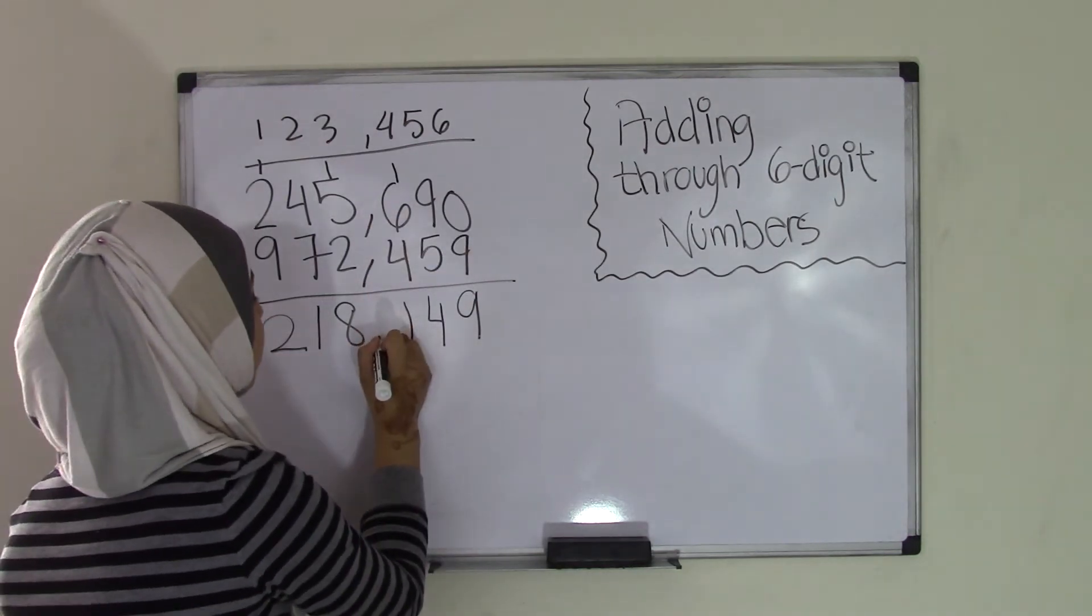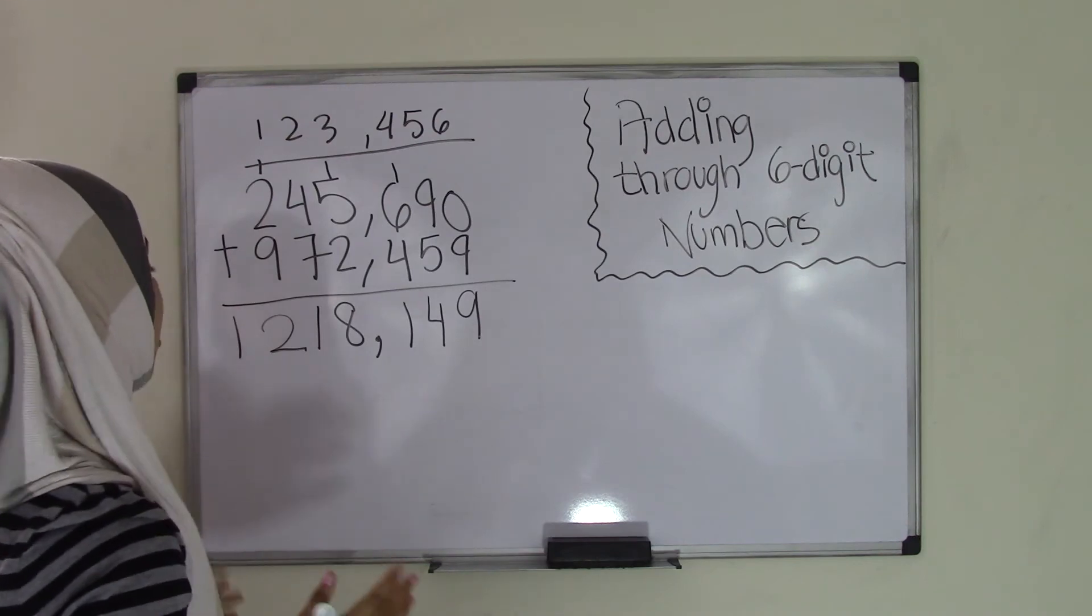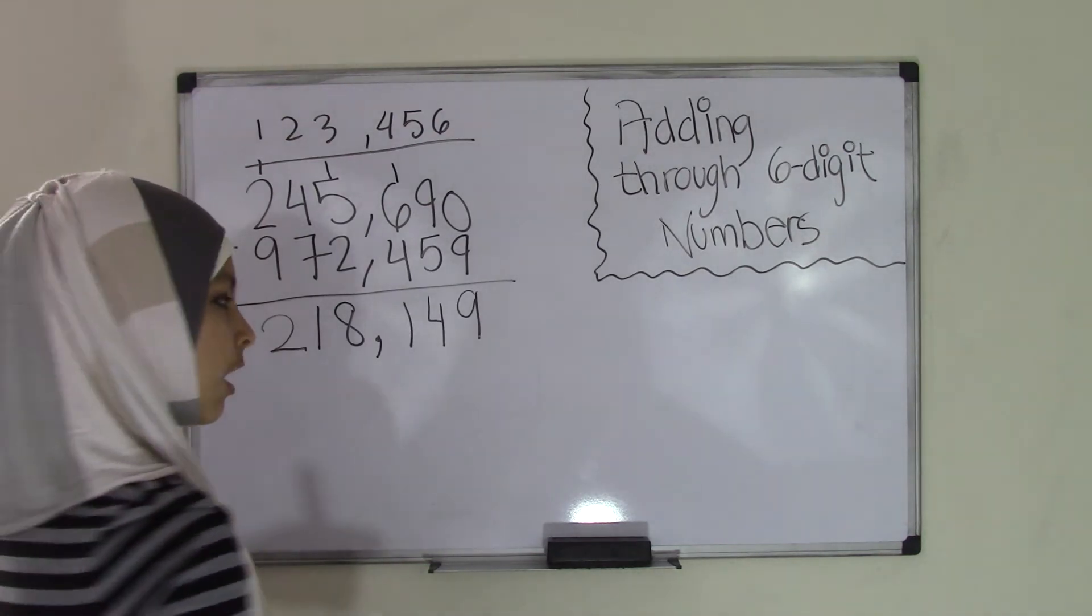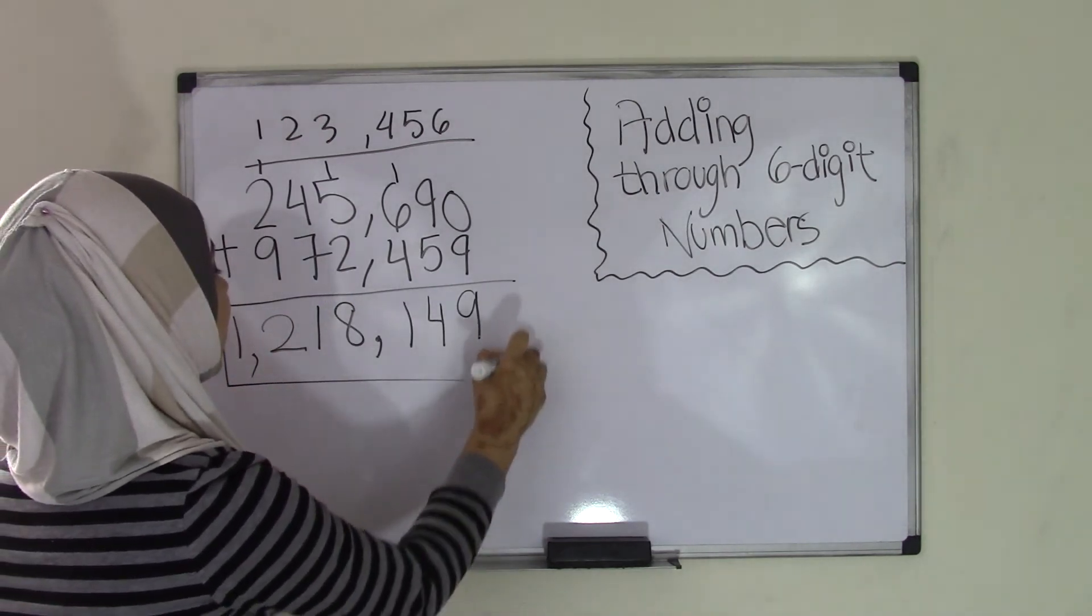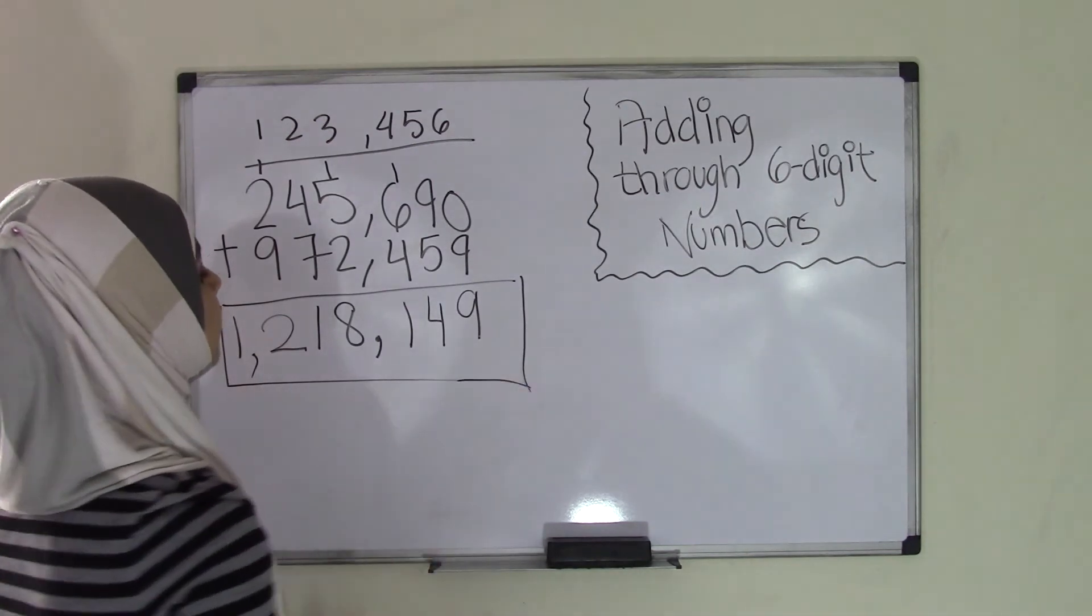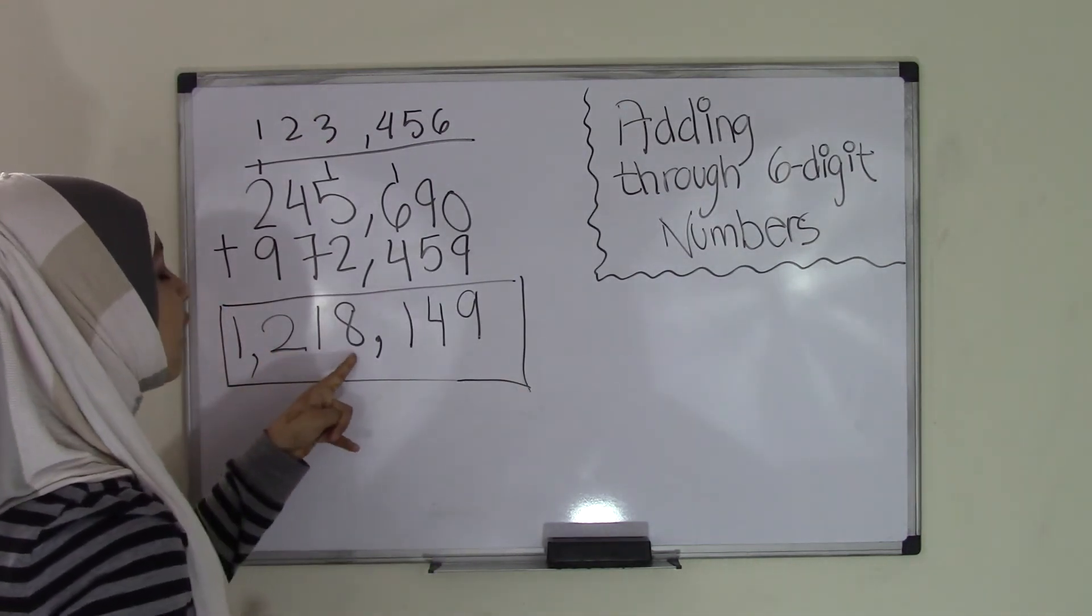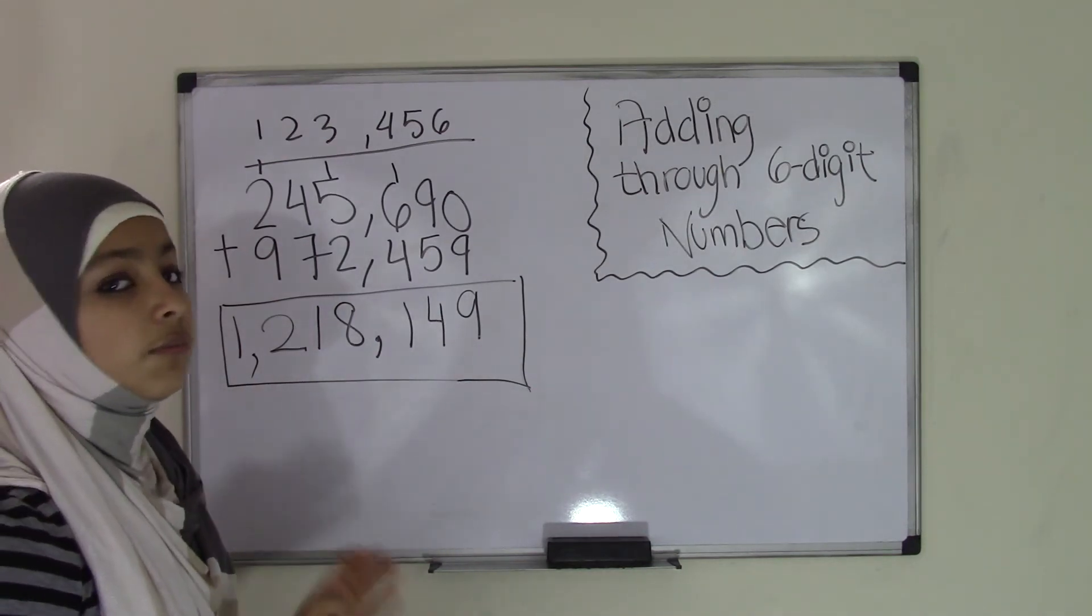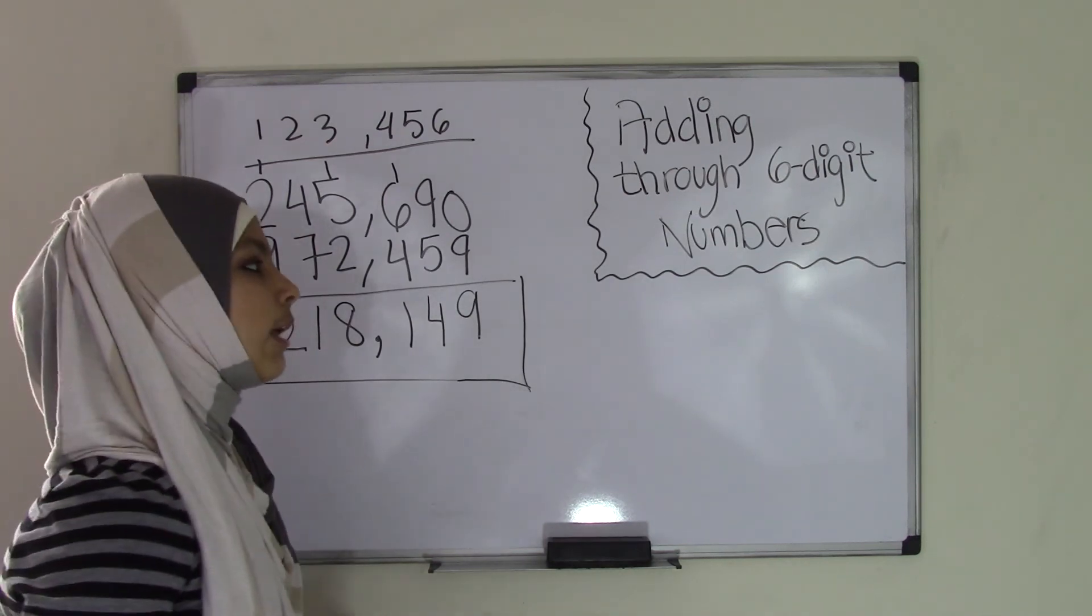And now I'm going to bring down this comma right here. Now if I look at this, there has to be another comma because this number has now gone into the millions. So I'm going to have to put a comma over here to make this 1,218,149. So this does have to deal with place value also in order to pronounce these numbers. So that's that for adding through 6-digit numbers.